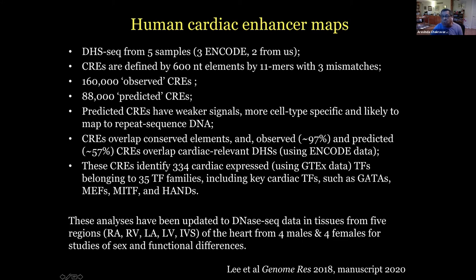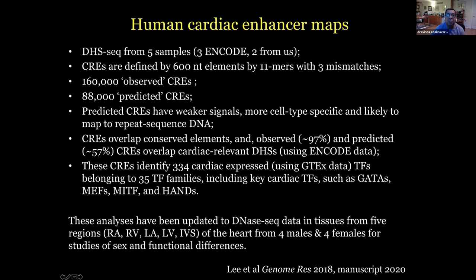We identified 334 such factors belonging to 35 different transcription factor families. Importantly, we discovered or rediscovered all of the key cardiac transcription factors that are known — the GATAs, the MEFs, the MITFs, and such. We are now working on this with an additional number of samples, both males and females, having geographically different samples — cardiac geography, looking at the right atria and the ventricles and the interventricular septum and so on.